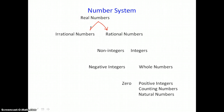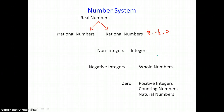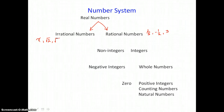Rational numbers are any real numbers that can be written as fractions. Examples would be two-thirds, negative one-half. Three is a rational number because it can be written as the fraction 3 over 1. Numbers that cannot be written as fractions are irrational numbers — numbers like pi, square root of 2, and square root of 10.